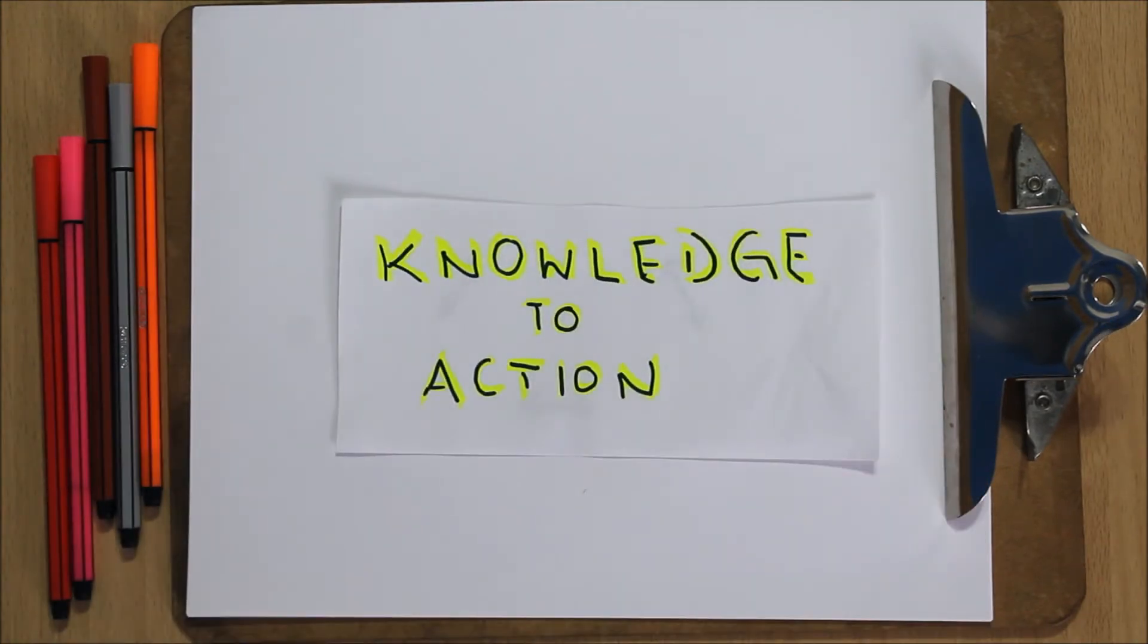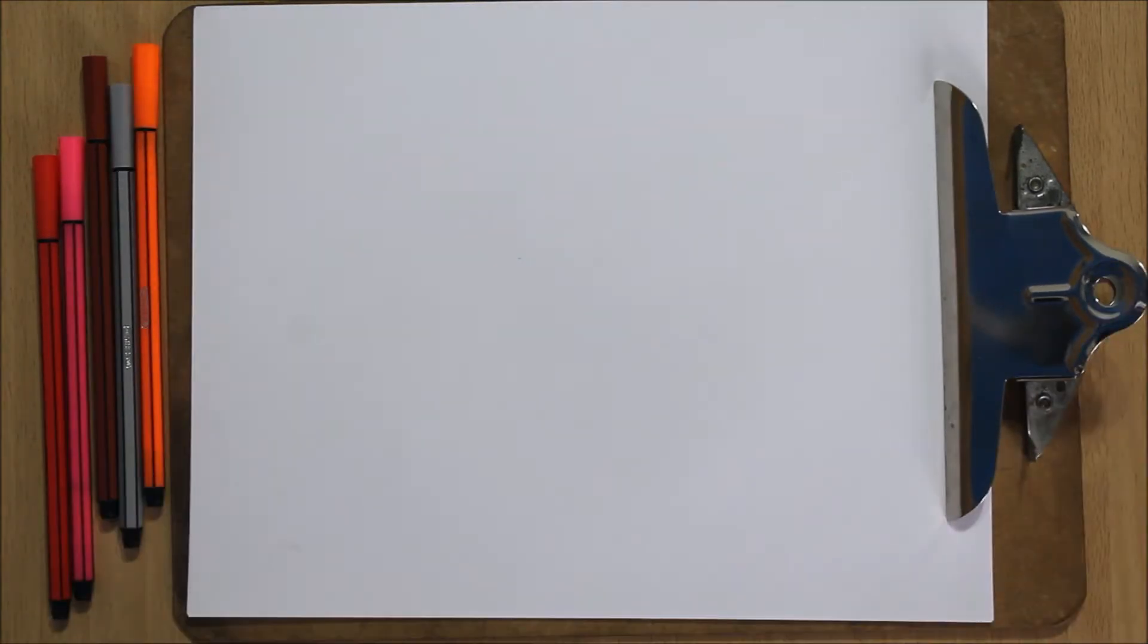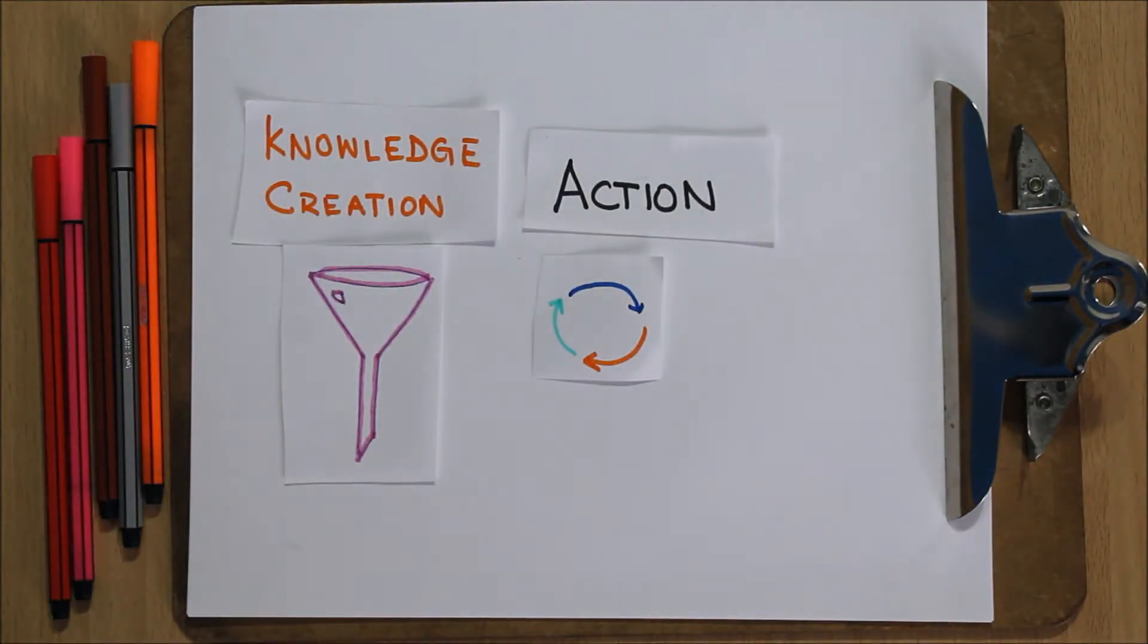There are many models of knowledge translation. One frequently cited model first described by Graham et al. in 2006 is called the knowledge to action model. It divides knowledge translation into two parts: the knowledge creation funnel, and the action cycle.